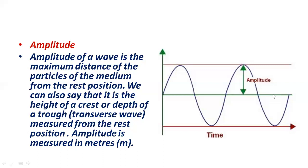Amplitude of a wave is the maximum distance of the particles of the medium from the rest position. We can also say that it is the height of a crest or the depth of a trough in a transverse wave, measured from the resting position. The unit of amplitude is meters, the same as wavelength.